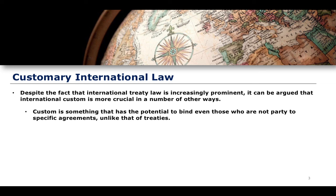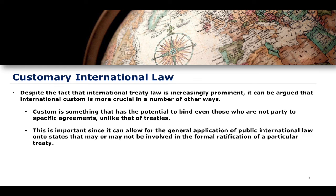So the question of importance was: to what extent do the Geneva Conventions of 1949 bind the participants in the armed conflict, given that the state of Eritrea had not been party to the Geneva Conventions? The Ethiopia-Eritrea Claims Commission — I believe it was Claim 4 — held that there are significant swathes of the original 1949 Geneva Conventions, essentially all of them, that have now entered into the realm of being customary in nature. They therefore have a certain amount of binding authority, despite the fact that Eritrea had not been a party to those treaties. This illustrates the general application of public international law onto states that may or may not be involved in the formal ratification of a particular treaty.